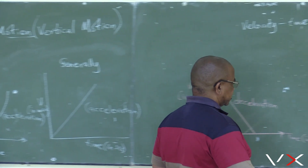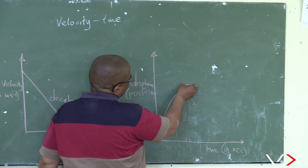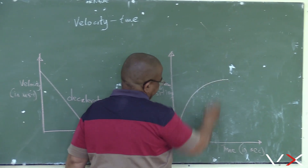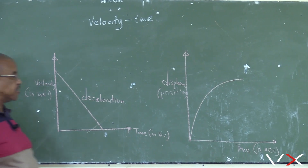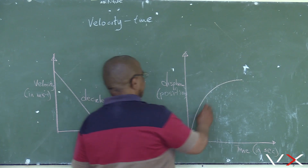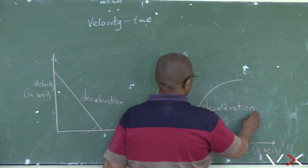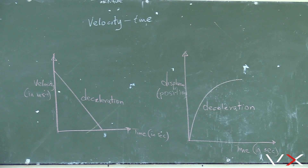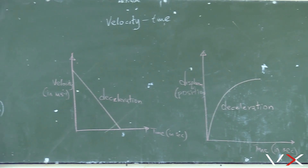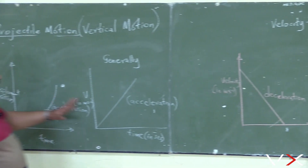For deceleration, the shape of the curve on the displacement-time graph is concave. The shape of the corner changes. First there is deceleration, and the shape, then acceleration — this is acceleration, this is deceleration.